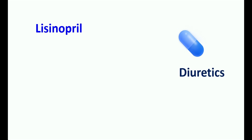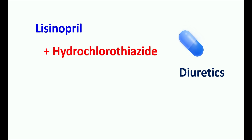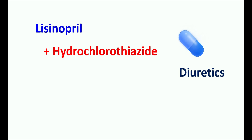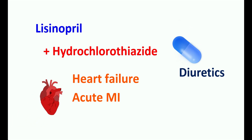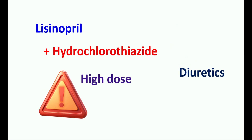On the other hand, lisinopril can be combined with diuretics, generally hydrochlorothiazide, to produce significant control on blood pressure, and this combination can also be used in the treatment of heart failure and acute myocardial infarction. However, when combining diuretics with lisinopril, diuretics should be used at a low dose, as a high dose can produce significant hypotension. Whenever lisinopril is initiated, diuretics should be stopped for at least 3 days first.